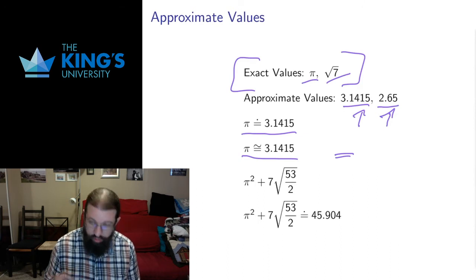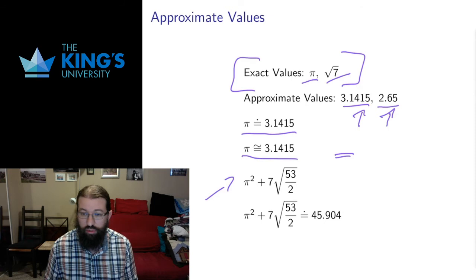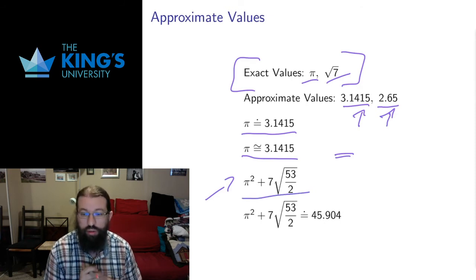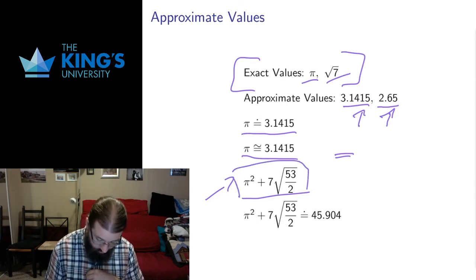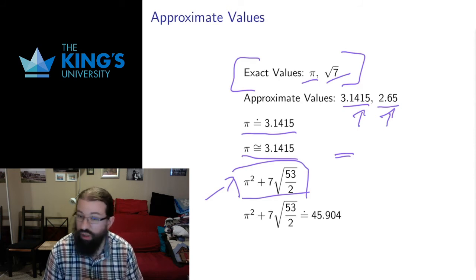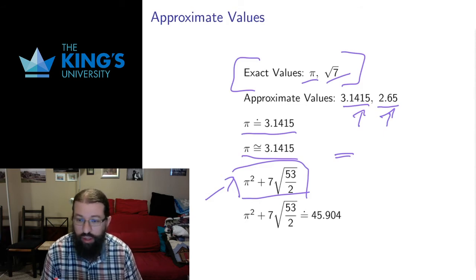If you do a calculation with exact values, you might end up with a complicated expression in exact values. And this expression is good in terms of calculation. There's no loss in terms of error. But it's not a good expression for just looking at it and saying, well, how much is that? π² + 7√53/2. I can't look at that and have a really good guess of roughly where that is. I would probably guess it's larger than 10 and less than 100, but I can't really guess any more accurately than that.